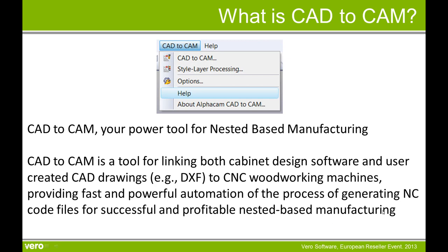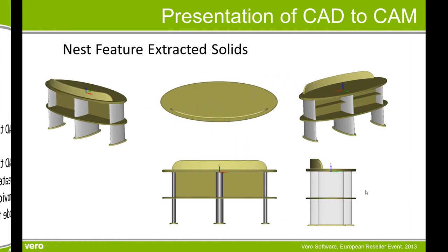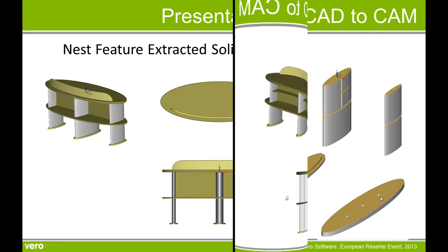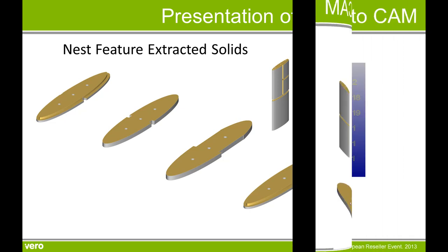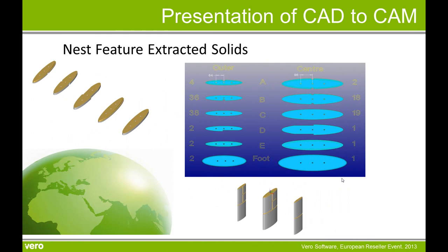Next we will give you a short presentation of how we use CAD2CAM to process feature extracted solids. We have this reception desk here which was created as a solid and we received it as a parasolid. The legs were created as a series of 20mm thick sections, and these were feature extracted within AlphaCAM and then saved away as ARD files.